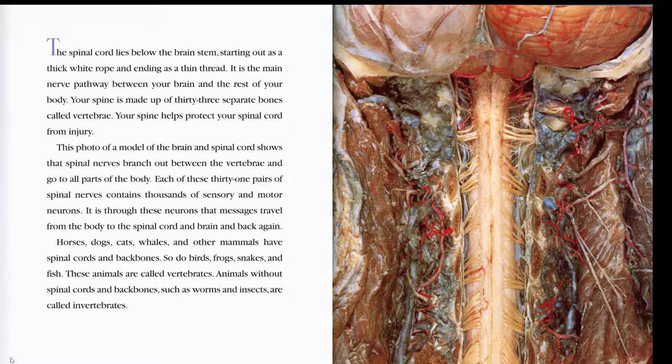The spinal cord lies below the brain stem, starting out as a thick white rope and ending as a thin thread. It is the main nerve pathway between your brain and the rest of your body. Your spine is made up of 33 separate bones called vertebrae. Your spine helps protect your spinal cord from injury. This photo of a model of the brain and spinal cord shows that spinal nerves branch out between the vertebrae and go to all parts of the body. Each of these 31 pairs of spinal nerves contains thousands of sensory and motor neurons. It is through these neurons that messages travel from the body to the spinal cord and brain and back again.